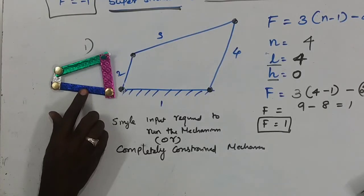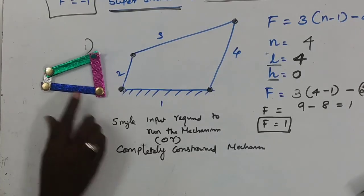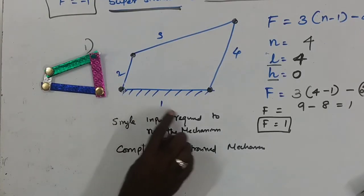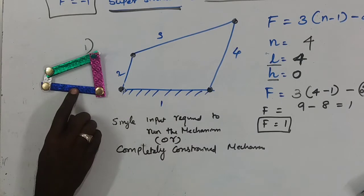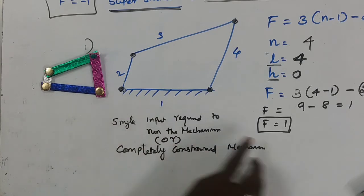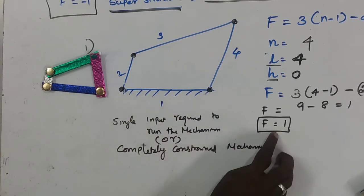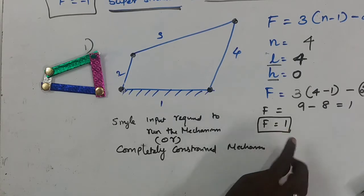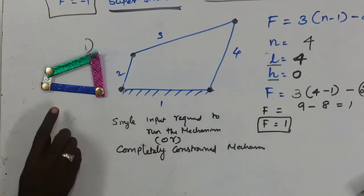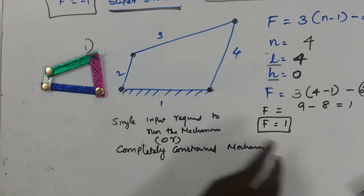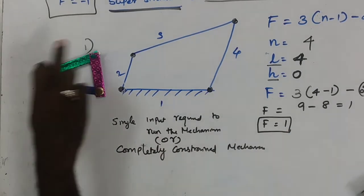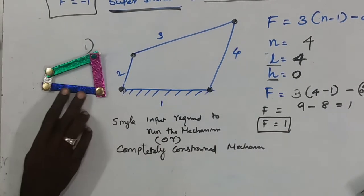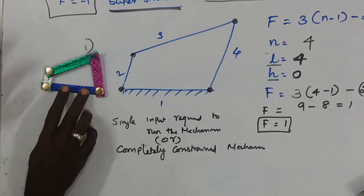This is the 4-bar mechanism model — one link is fixed. The answer F = 1 means single input is required to run the mechanism, and it is a completely constrained mechanism.